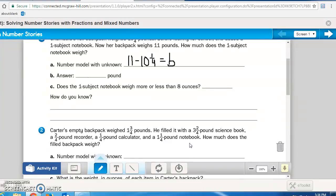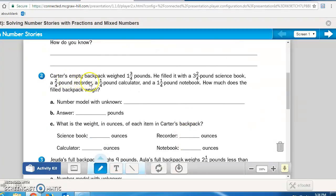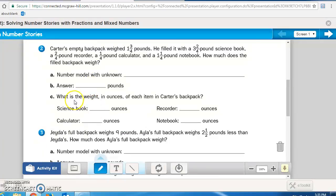Pause the recording now and do number one. If you need to hear the other problems read to you, you can turn it back on to hear me reading it. Number two says, Carter's empty backpack weighed 1 and 3/4 pounds. He filled it with a 3 and 2/4 pound science book, a 2/4 pound recorder, a 1/4 pound calculator, and a 1 and 1/4 pound notebook. How much does the filled backpack weigh? Your number model with the unknown would go on this line. You should realize that you're going to be adding these together if you're looking for how much it weighs now. You need to find that answer in pounds. Then you need to find out how many ounces the science book is. So I have to look at three pounds, convert that into ounces, and then 2/4, two is half of four, so I got to add half of a pound onto that total to come up with the total ounces.